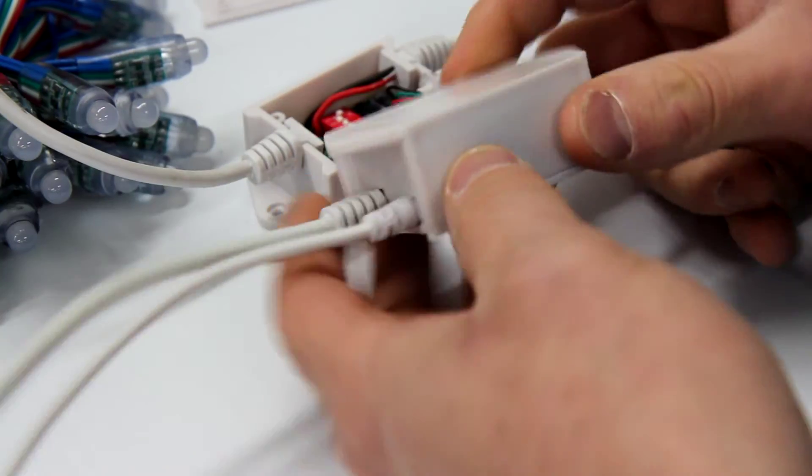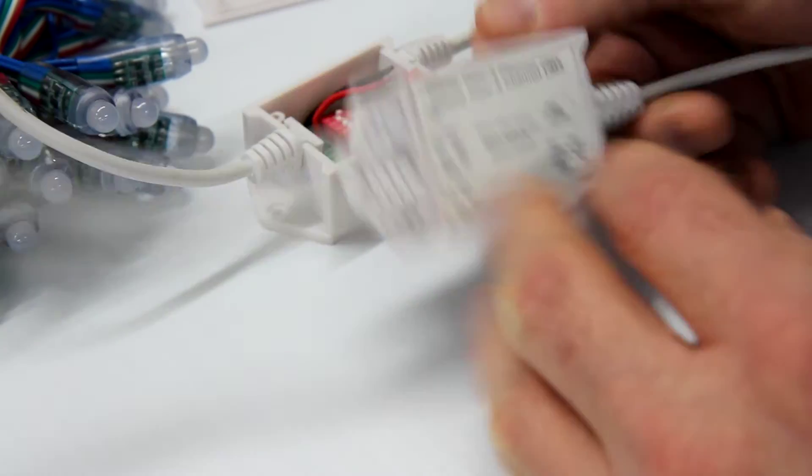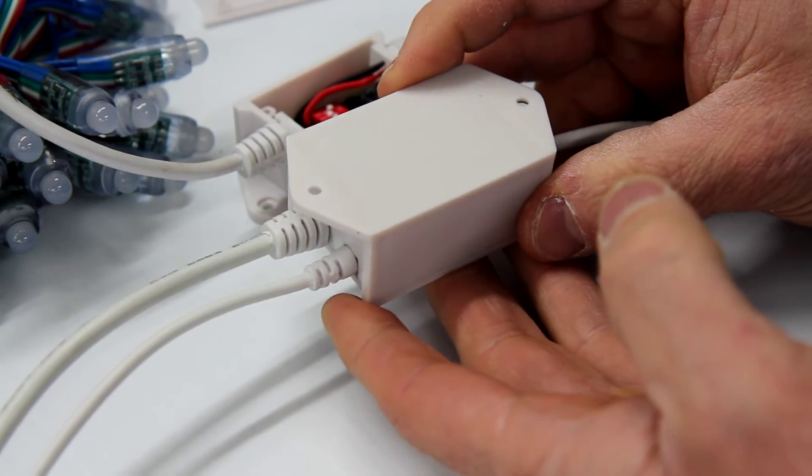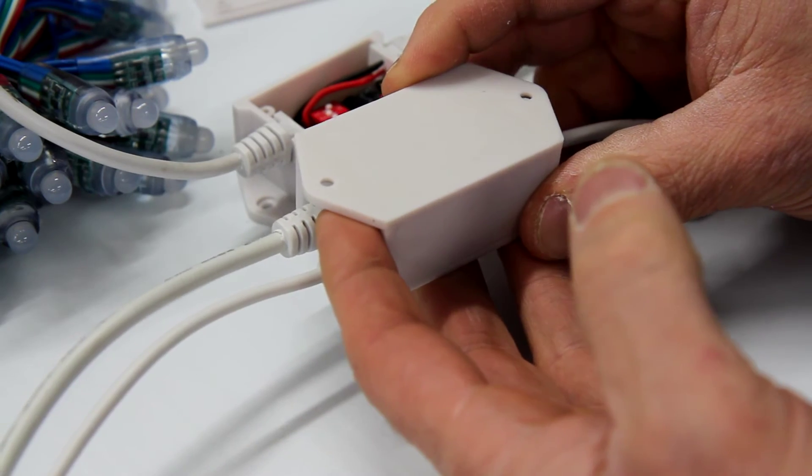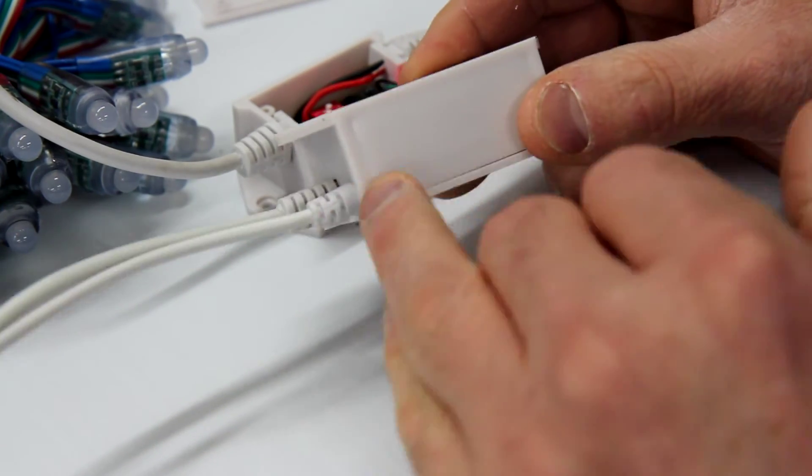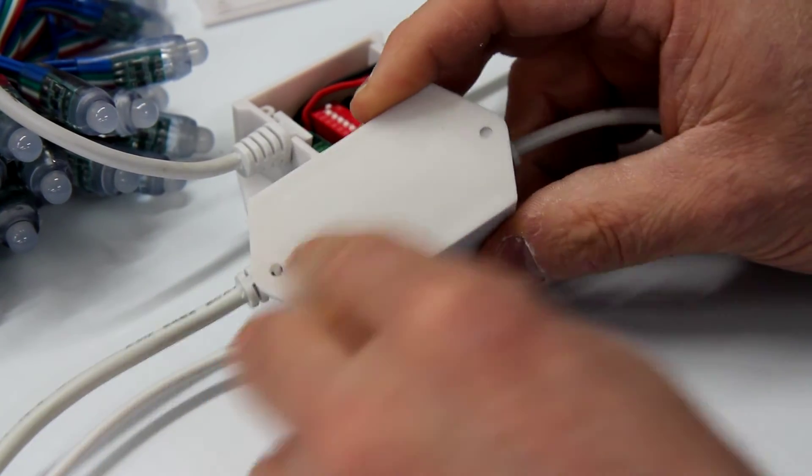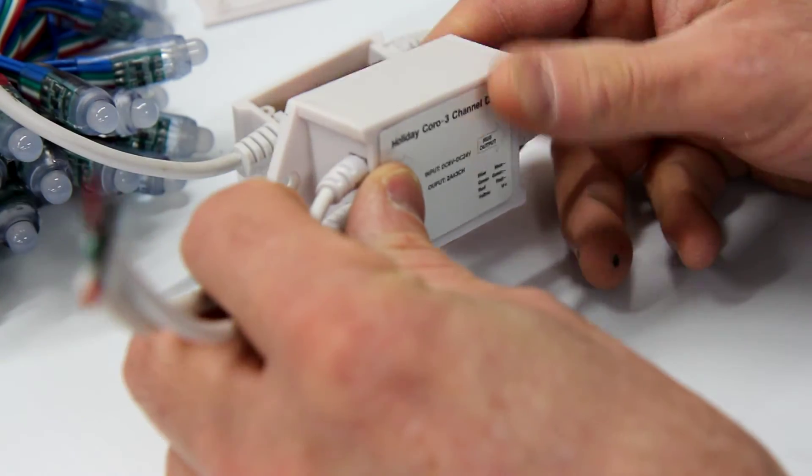We do recommend, if you have a water situation and water is coming down on the controller, mounting it upside down, as the case bottom is down here. You can see it has screw terminals so you can screw that down to something.